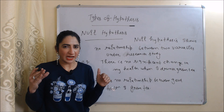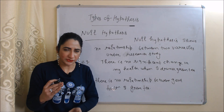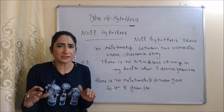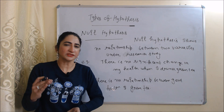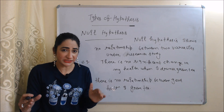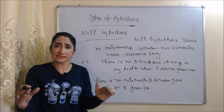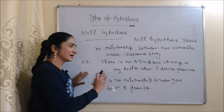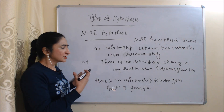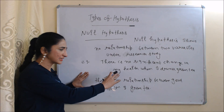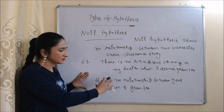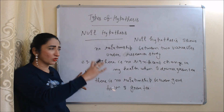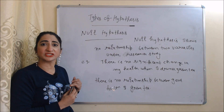The next type is null hypothesis. Null hypothesis shows no relationship between two variables under a research study. For example, there is no significant change in my health when I drink green tea — so there is no relationship between good health and green tea. This is called a null hypothesis.